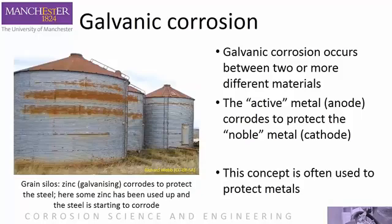Galvanic corrosion is a form of general corrosion driven by two different metals. The more active metal, or anode, corrodes to protect the more noble metal, or cathode. We can use this idea to protect metals from corrosion in practice using sacrificial anodes, such as aluminium, or as in the picture, zinc galvanising to protect steel from corrosion. Although in this image, much of the zinc has dissolved, leaving the steel to get rusty.